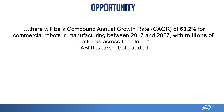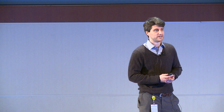This is from an ABI Research report saying that there will be a compound annual growth rate of 63.2% for commercial robots in manufacturing between 2017 and 2027, with millions of platforms across the globe. This number is huge. For those of you involved in mobile robotics today, this should be extremely exciting for the market opportunity that's there. I can tell you that Intel is really excited, and that's why I'm here.